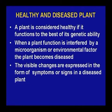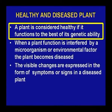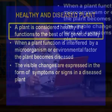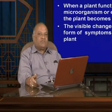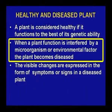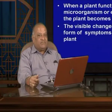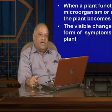Now, the question comes: what is a healthy plant? A healthy plant is one which produces its yield to its full genetic ability. But whenever this healthy plant is confronted with any sort of pathogen, it is called a diseased plant. Disease occurs by means of three factors: susceptible host, virulent pathogen, and favorable environment. When all three are present, only then the disease will appear in the field.